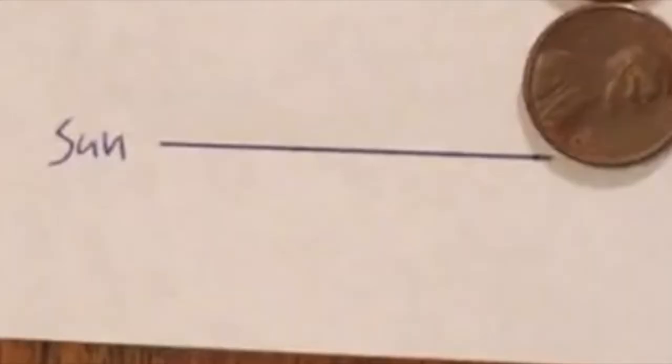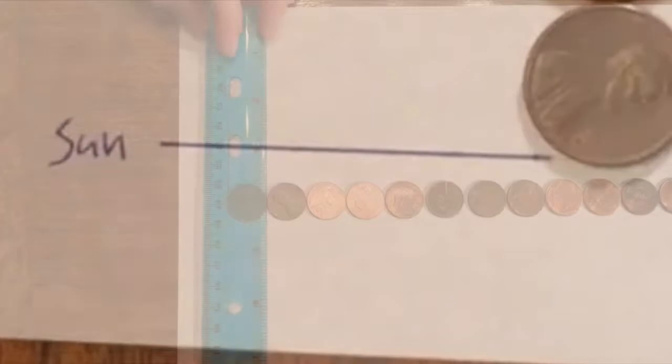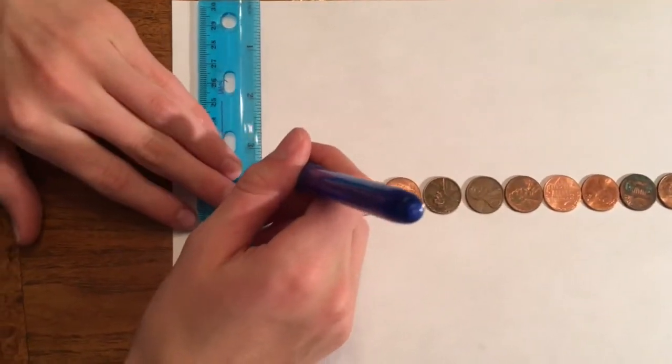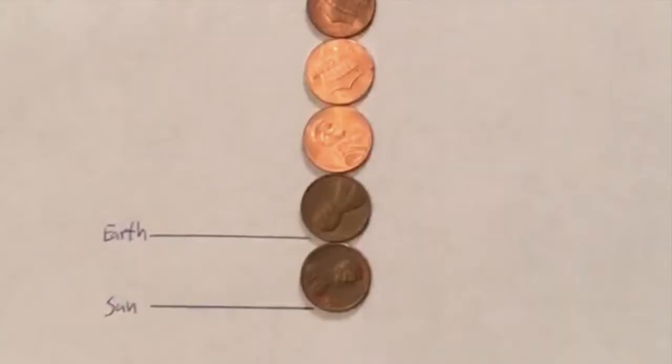A penny is placed next to the line labeled sun and a vertical line is drawn on the other side of the penny. This line is labeled earth.